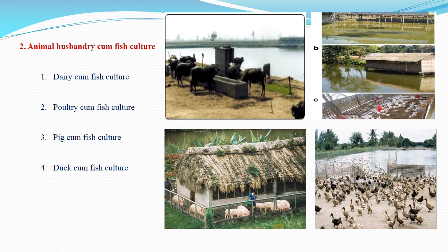Animal husbandry-cum-fish culture also has four types: dairy-cum-fish culture, poultry-cum-fish culture, pig-cum-fish culture, and duck-cum-fish culture. In all these, fish culture is integrated with one of the domestic animals, and this combined practice is called animal husbandry-cum-fish culture.